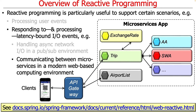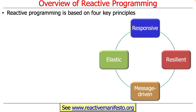Yet another use case is communicating between microservices in a modern web-based computing environment. You would have microservices running in a background data center in a cluster. When clients send requests, they don't go to the microservices directly — they go to something called an API gateway, which serves as a mediator that farms requests out to various microservices. In fact, programming assignment number two had a server implemented that way, with a main controller acting as the API gateway. However, it used traditional Java synchronous streams programming, not reactive programming — though we can do reactive programming here as well.